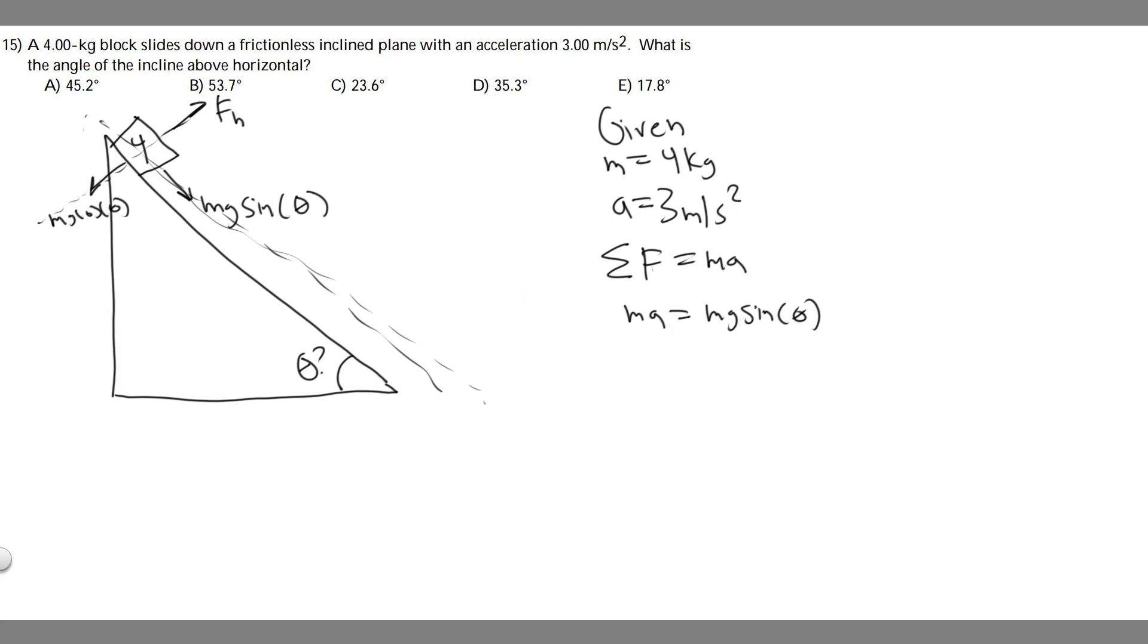So really, it's just that simple. We just have to solve now. So the mass is 4, acceleration is 3, equals mass, which is 4, times 9.8.